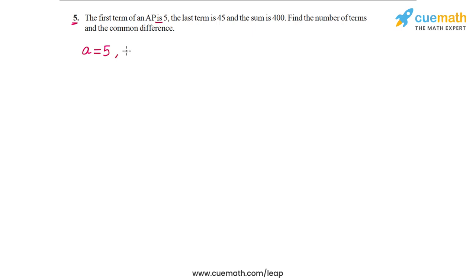The last term is 45, so L is 45. And the sum of terms is 400, so S is equal to 400. And we have to find the number of terms, so we have to find N. And we have to find the common difference, so we also have to find D.